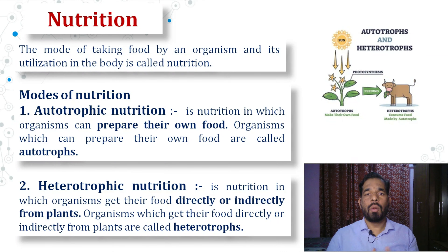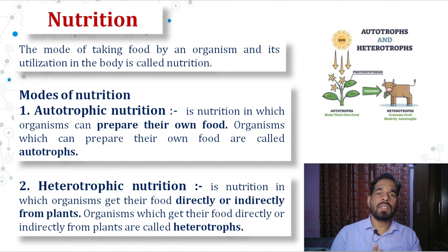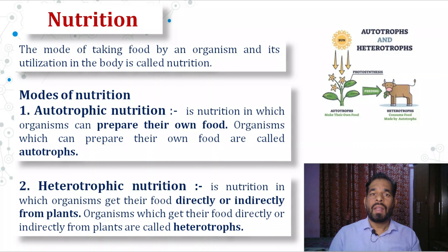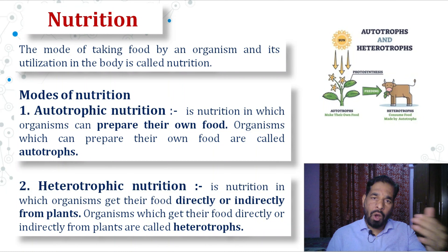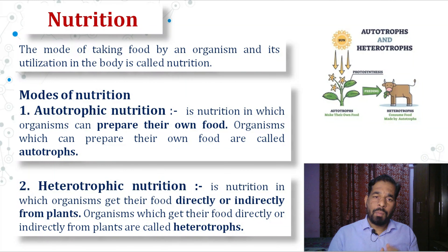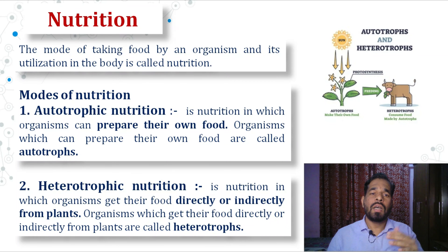The next mode of nutrition is heterotrophic nutrition. It is a nutrition in which organisms get their food directly or indirectly from plant material, and therefore these are considered as heterotrophs. Hetero means others, so organisms which depend on others for their food are called heterotrophs. Examples are animals, which are heterotrophic because they are dependent upon autotrophs, that means plants, for their food.